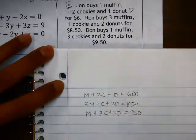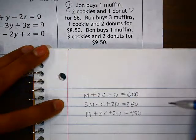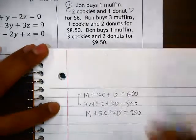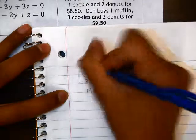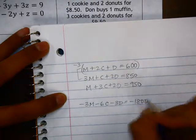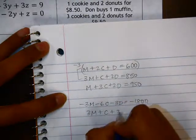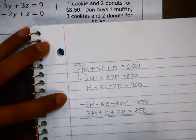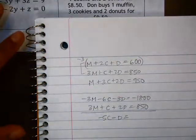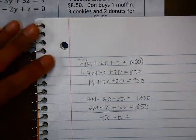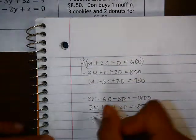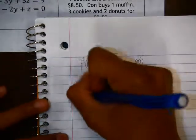So we need to solve this system of three equations. You can choose whichever variable you want to eliminate. I'm going to go ahead and just go with the M. First, if we pair up the first two equations, I need to multiply this first equation by negative 3. So that gives me negative 3M minus 6C minus 3D equals negative 1,800. Adding those first two together, we get negative 5C minus D equals negative 950. So here we have one equation where the M is eliminated. I'm just going to label that step one.